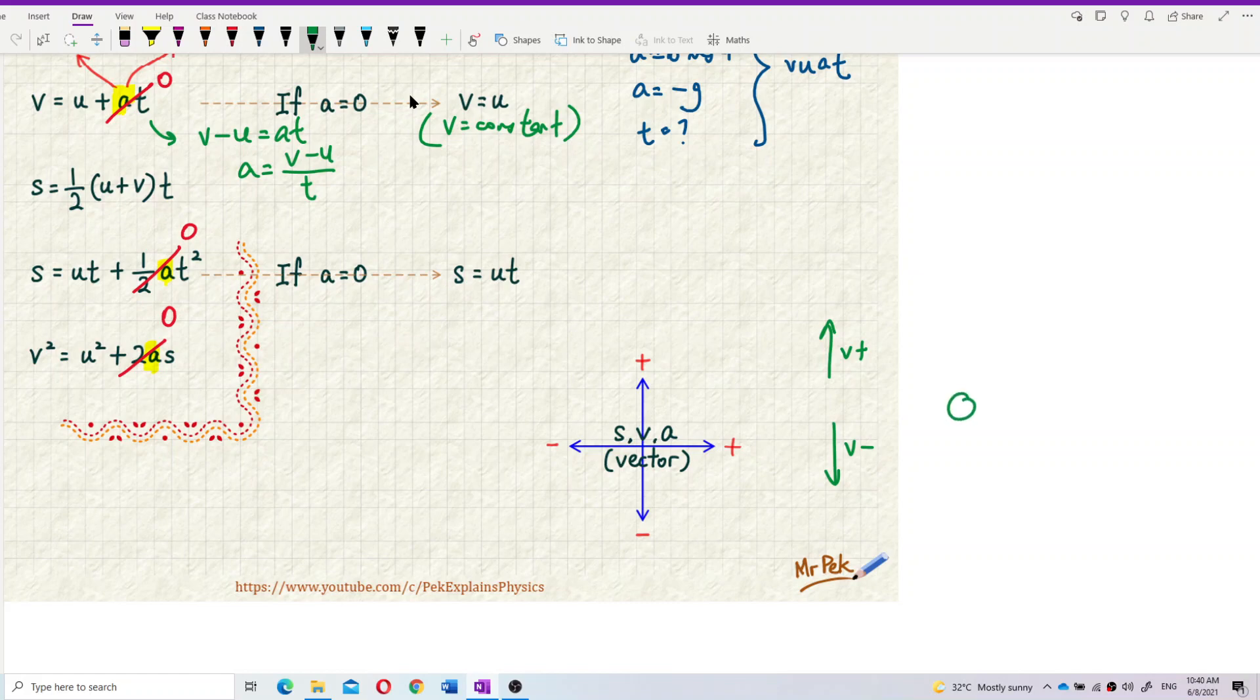And then for free fall objects, it is a free fall. So acceleration is downward. The acceleration due to gravity, because gravity is downward, so acceleration also, you must put negative. Acceleration negative because the gravity is downward towards the center of circle.